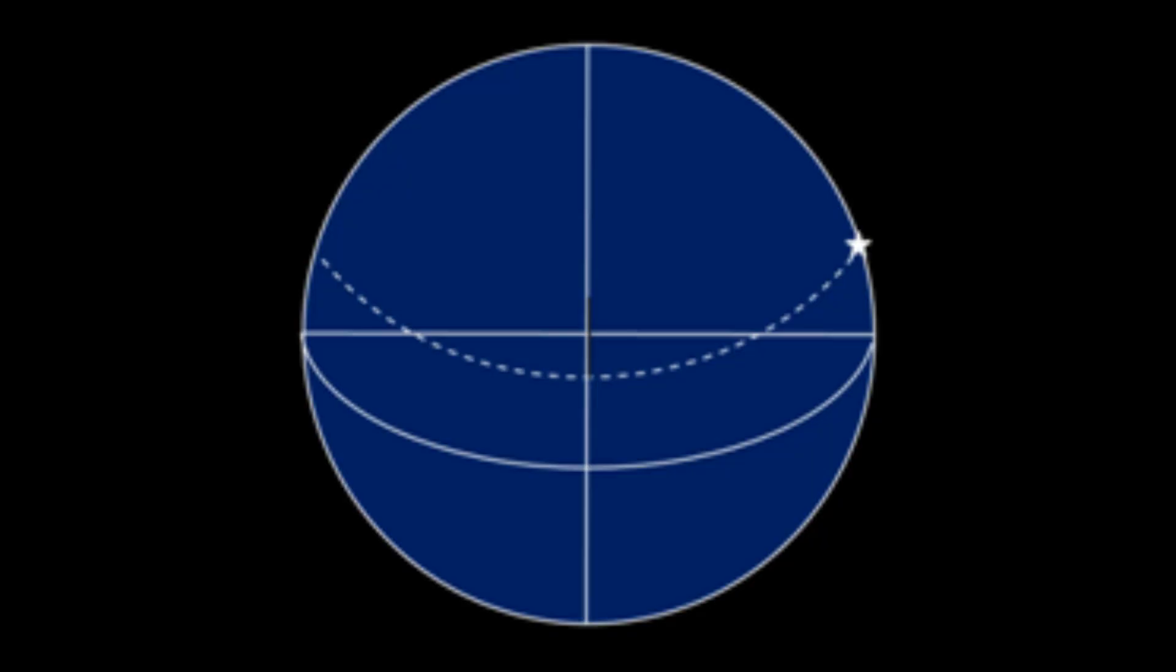Now, the interesting thing is we do not know the name of the star. We do not know our DR position also. We do not know what is latitude and longitude. But we are able to find out two things. Two important data can be determined from this situation: one is the latitude of observer and other one is declination of the star.